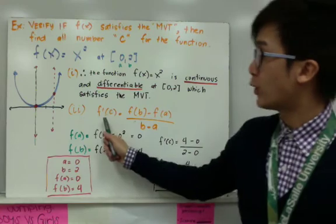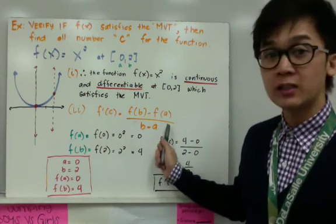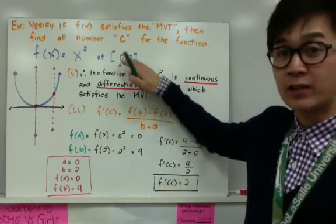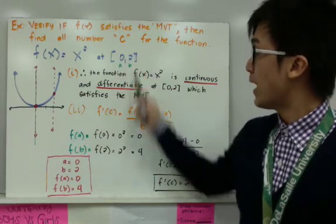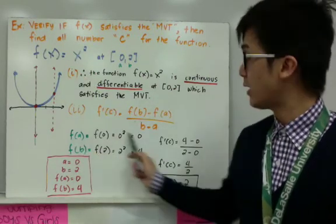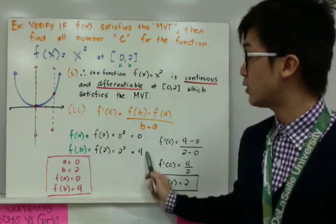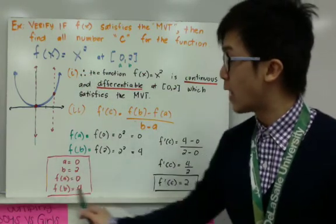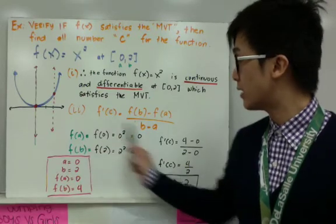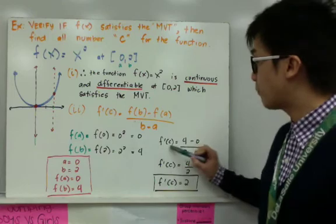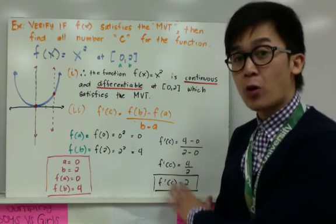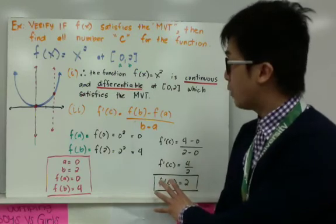For this step, we have f prime of c, given the formula f of b minus f of a all over b minus a. We'll be able to find point c using this formula. Using the given closed interval, a is equal to 0 and b is equal to 2. To find f of b and f of a, substitute a and b into the function x squared. Therefore, f of a is equal to 0 because 0 squared is 0, and f of b is equal to 4 because 2 squared equals 4. Organizing our values: a equals 0, b equals 2, f of a equals 0, and f of b equals 4. Using the formula, f prime of c is equal to 2. We're not finished yet because we only found f prime of c — this is just the slope that will be parallel to our secant line.